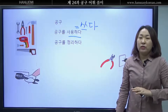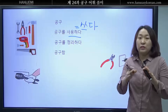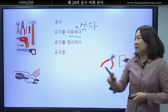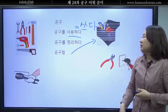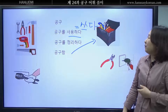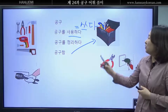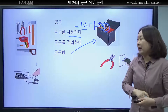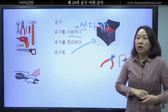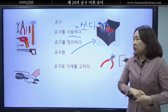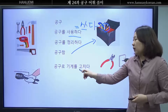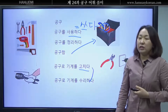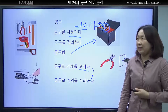공구를 정리하고 보관하는 상자를 공구함이라고 합니다. 이렇게 여러 가지 공구가 같이 있는 상자입니다. 공구함입니다. 여러분 우리는 공구를 언제 사용합니까? 네 공구로 기계를 고칩니다. 고치다. 고치다와 비슷한 말이 뭐예요? 네 공구로 기계를 수리하다 라고 이야기합니다.